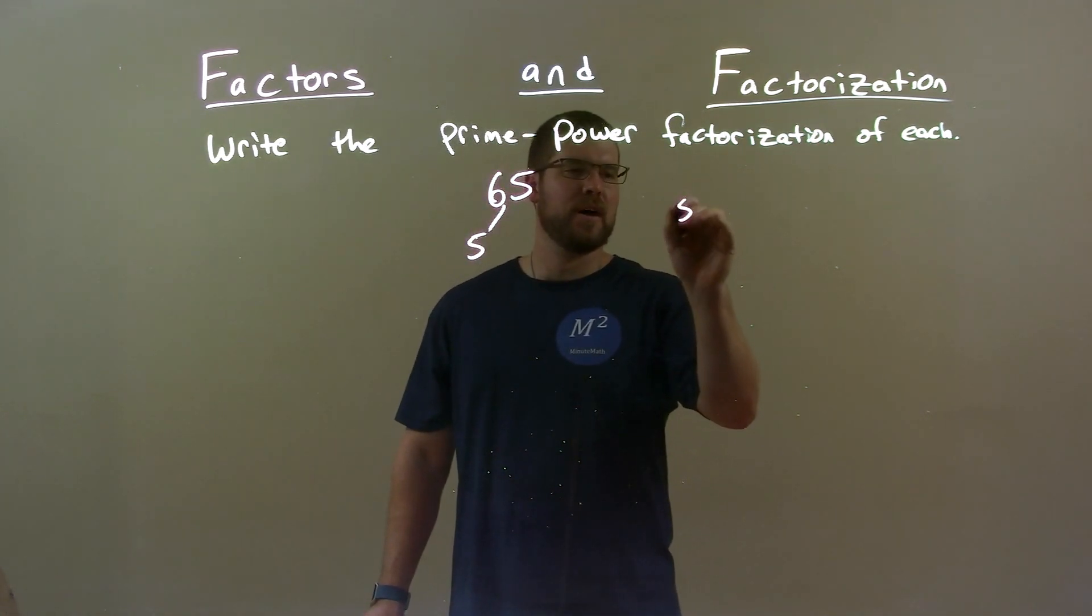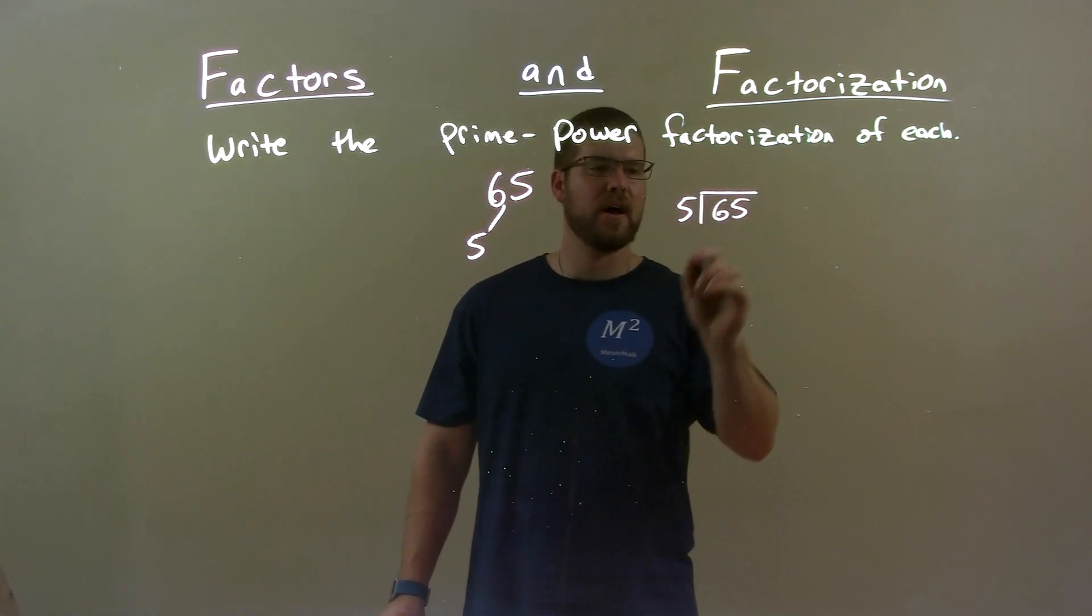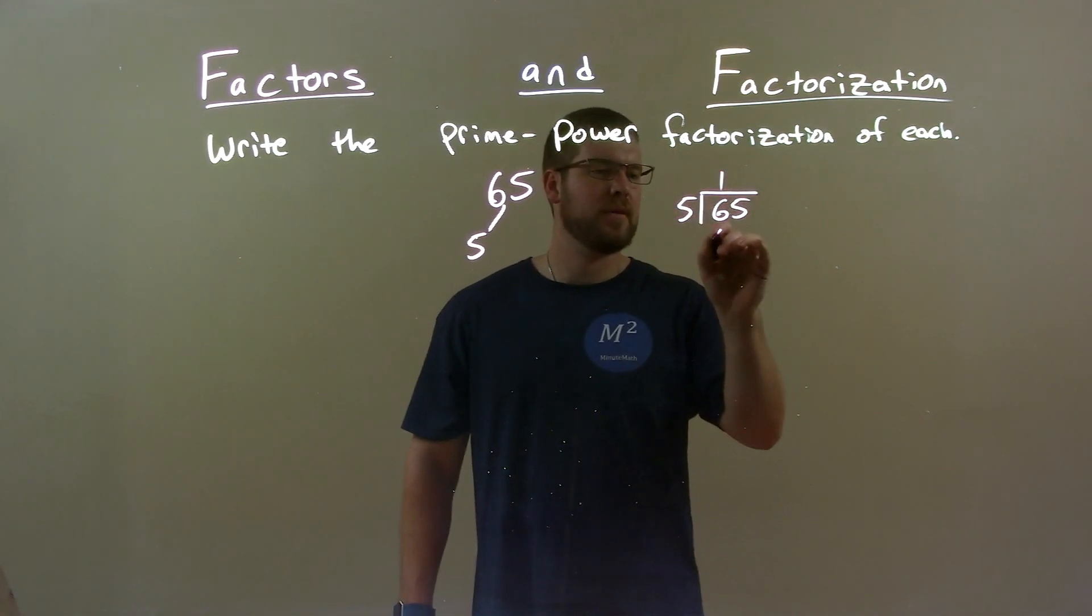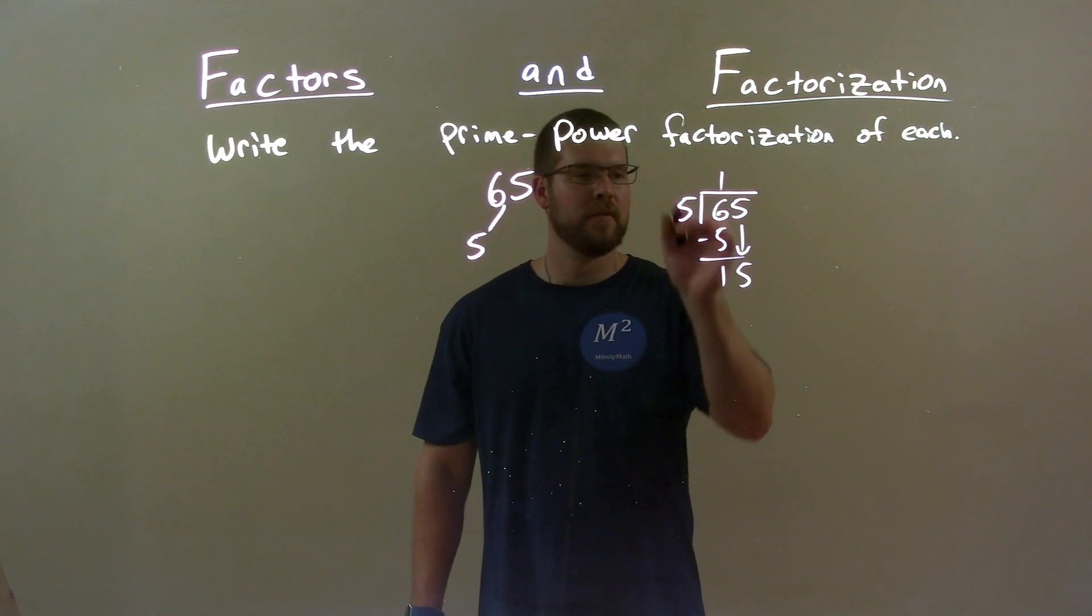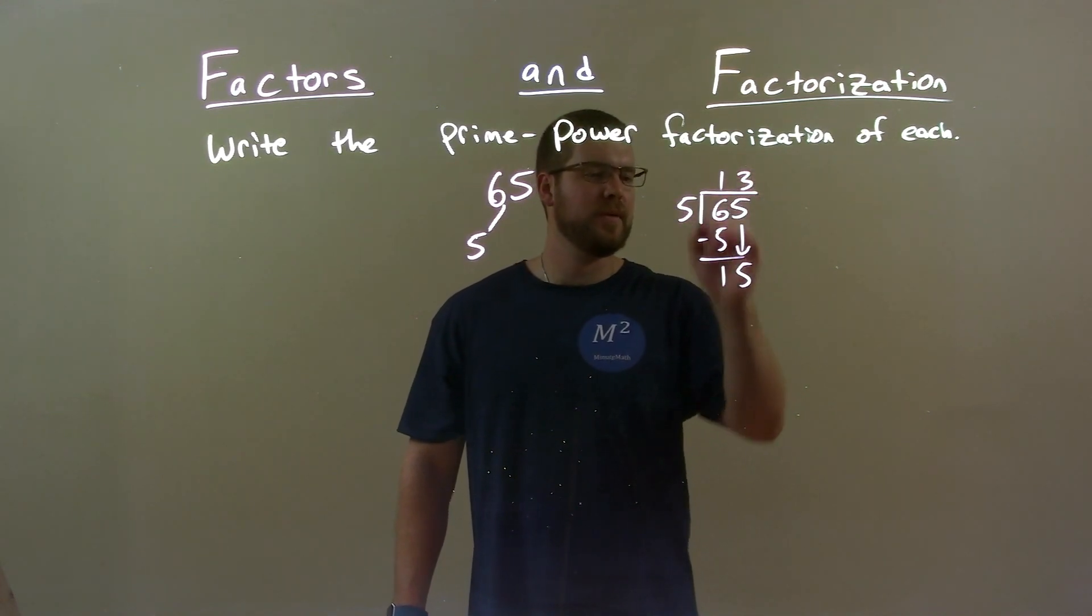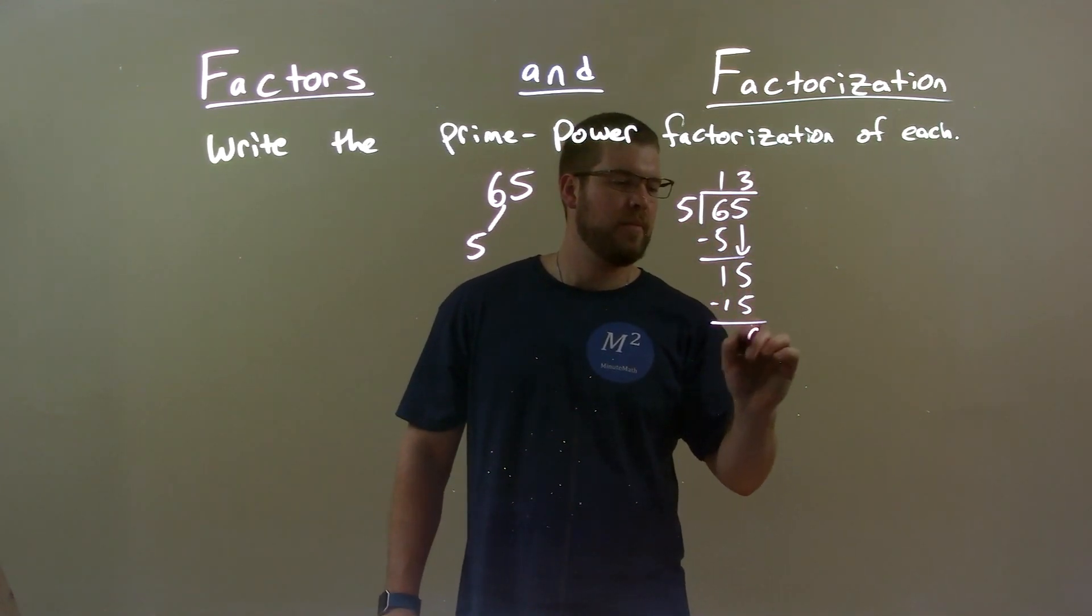Let's do long division. 5 goes into 65. 5 into 6 is 1, we have 5, subtract it, bring down the 5. Now we have 15, now it's a little more clear, 5 times 3 is 15, and we have 0.